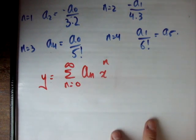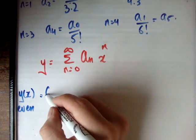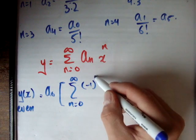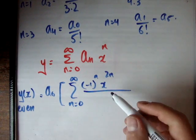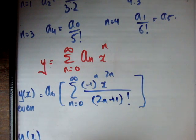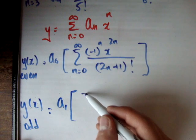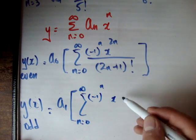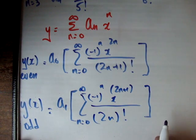So as a result, we're going to get the following. I'm going to say that y(x) even is equal to a0 outside of the sum from n is equal to 0 to infinity of (-1)^n times x^(2n) over (2n+1) factorial. And I'm going to say that y(x) odd is equal to a1 outside of the sum from n is equal to 0 to infinity of (-1)^n, x^(2n+1), over 2n factorial.